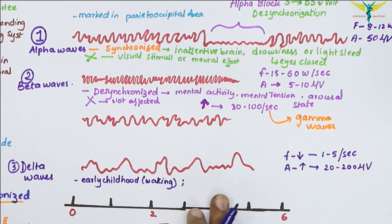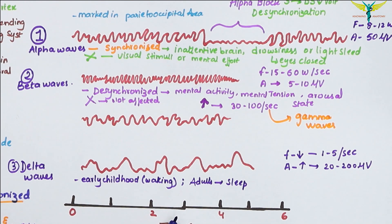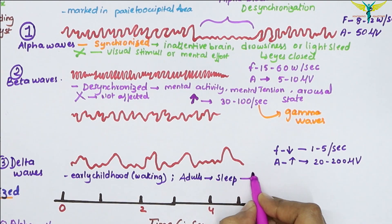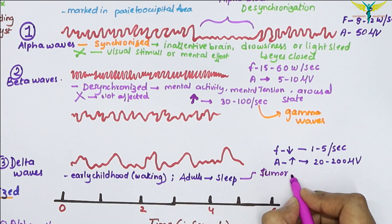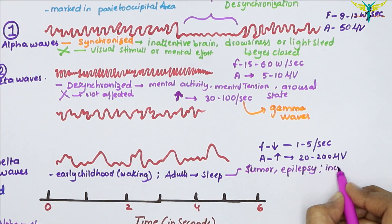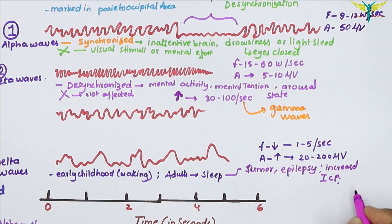These are common in early childhood during the waking hour, and in adults it appears mostly during sleep. The presence of delta waves in adults during conditions other than sleep indicates pathological processes in the brain, such as tumor, epilepsy, increased intracranial pressure, and mental deficiency or depression.